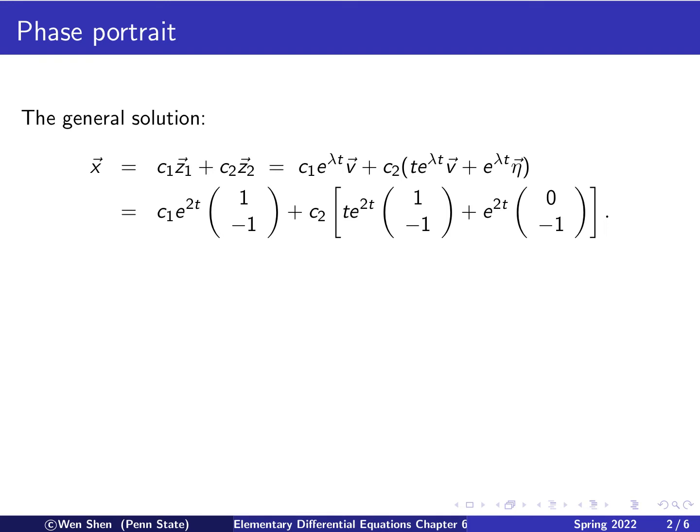So the discussion ended there, and in this video we pick that up and will continue the discussion on how to sketch the phase portrait. For the case with repeated eigenvalue and one eigenvector, the general solution takes the following form. Let's repeat it here.